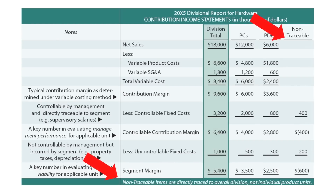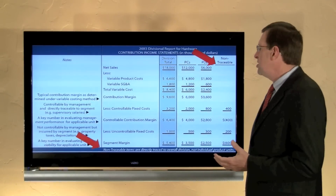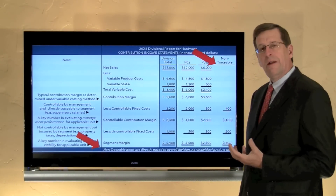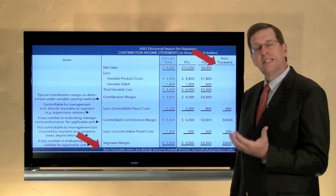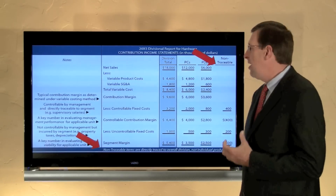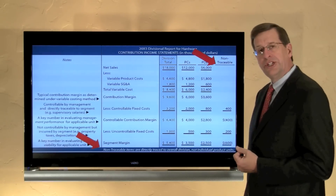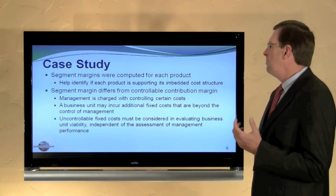There were certain non-traceable costs. Non-traceable items are directly traced to the overall division, not individual products, and so we're not allocating those to the PCs or PDEs. The division total is going to be carried forward into a successively higher aggregation report that we'll see in just a moment.